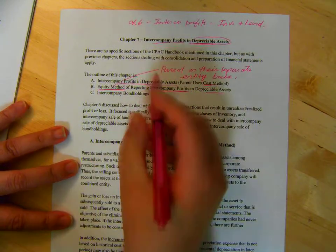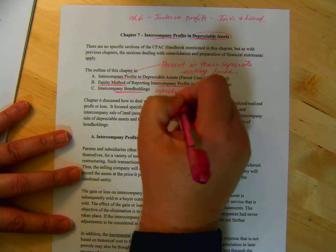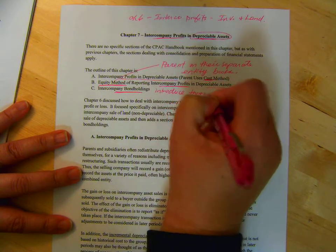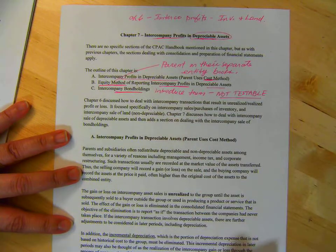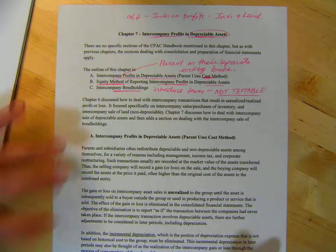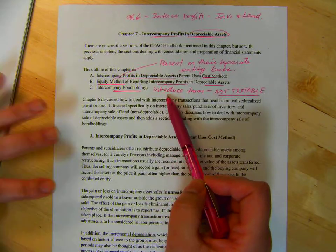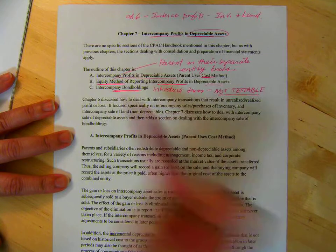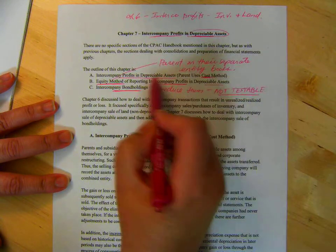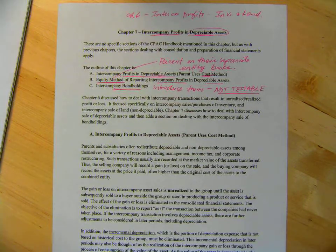And then we're going to do intercompany bond holdings. Actually, we're not going to do them. I'm going to introduce them and they are not going to be testable. I will give you the filled in notes that you can look. It's just with both inventory, land, and assets. Where are we? Here, right here. First, the profit or loss is unrealized and then it's realized.